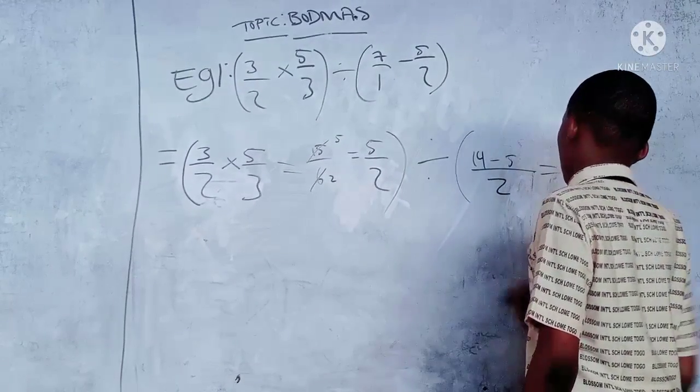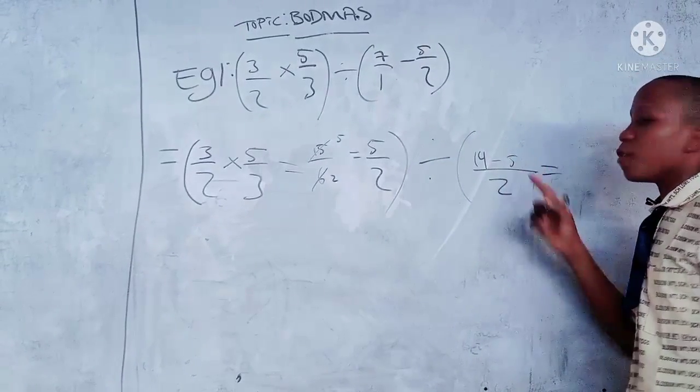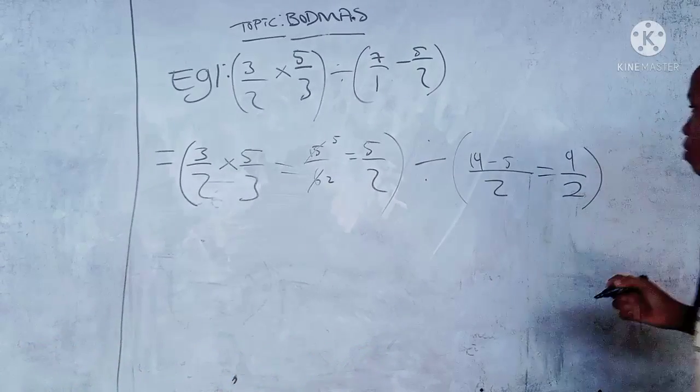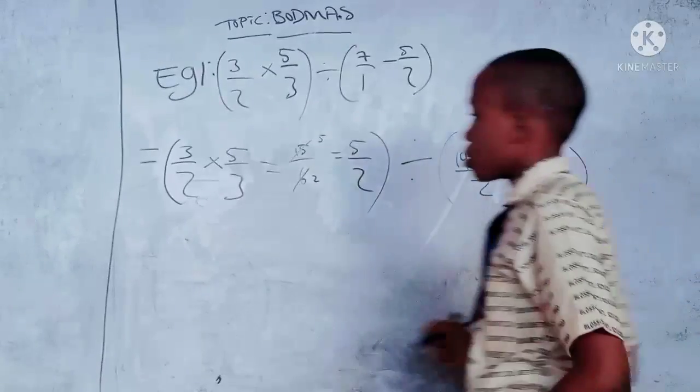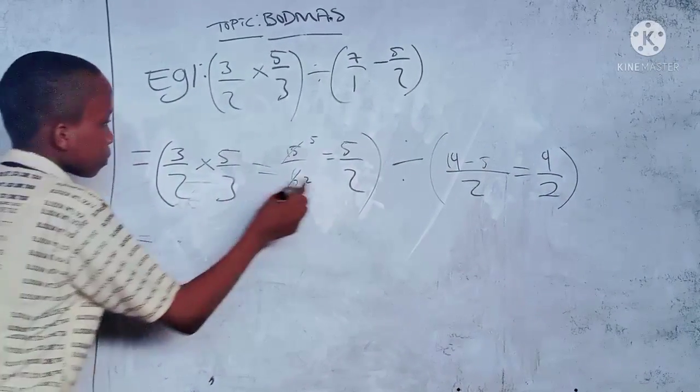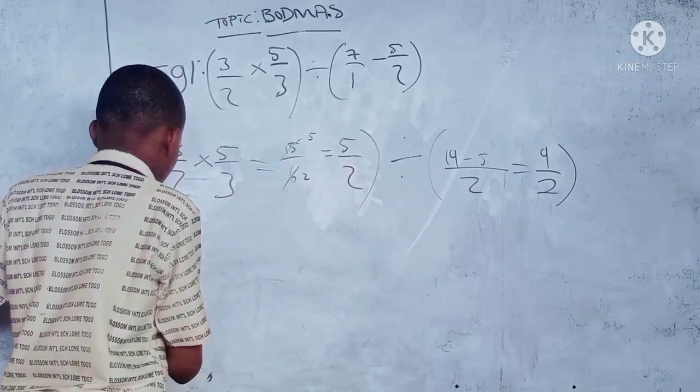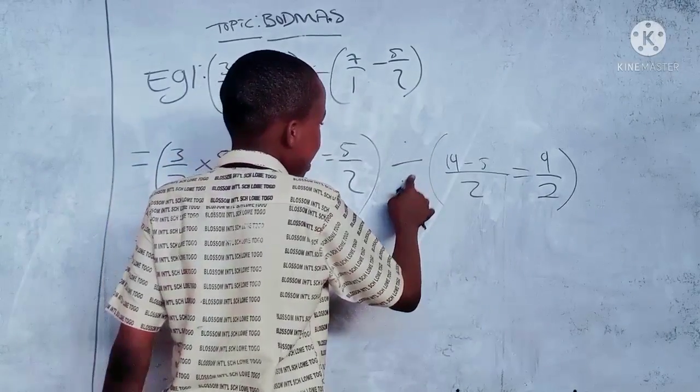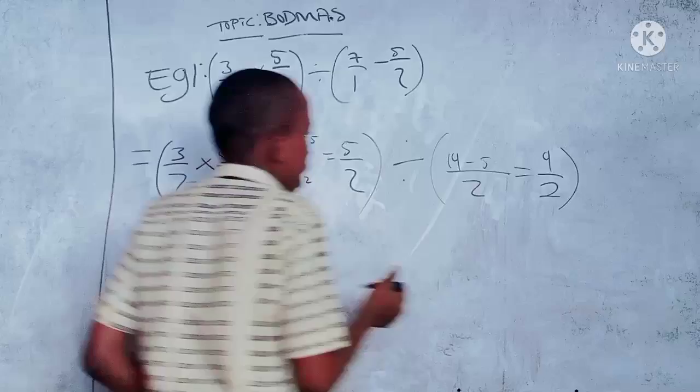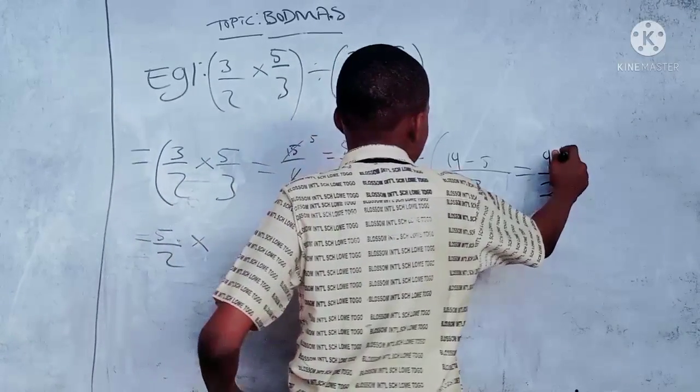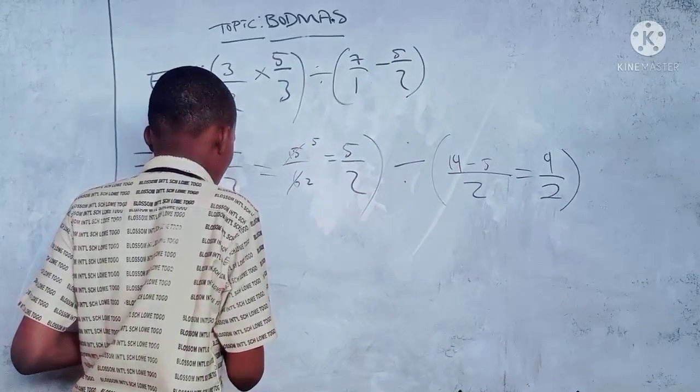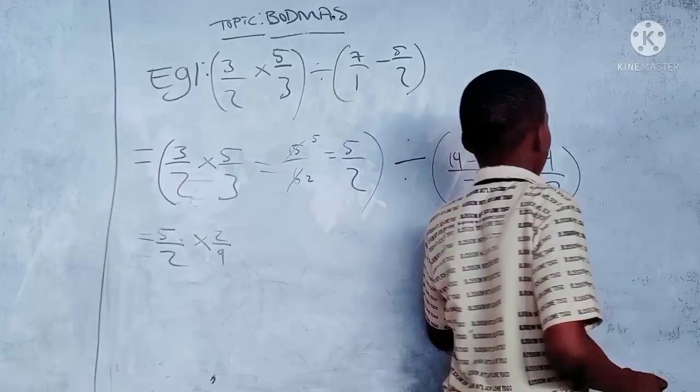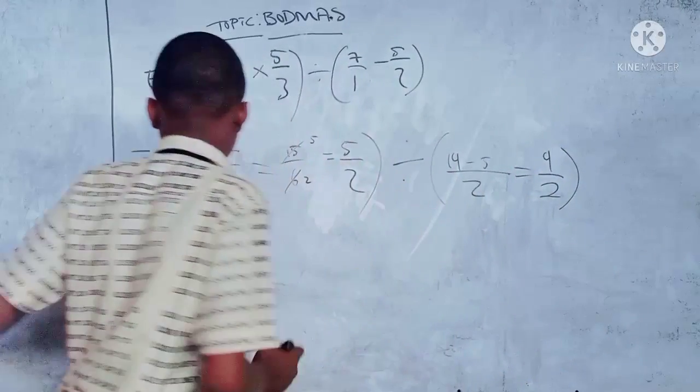Equals nine over two, close bracket. We'll bring down five over two times, change division to multiplication and reciprocate to two over nine. Reciprocation means turning the fraction upside down.